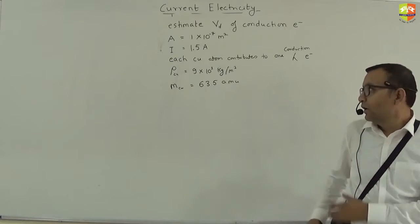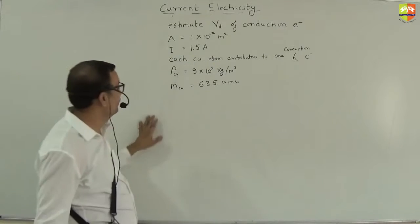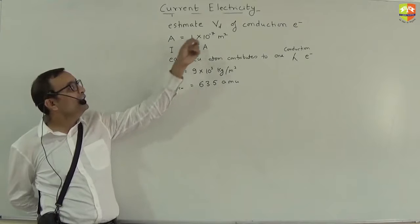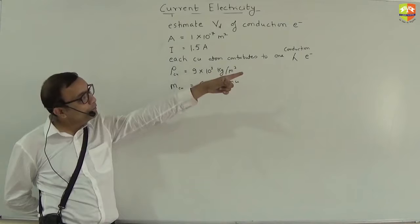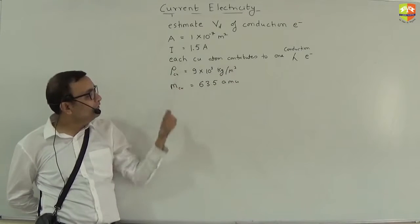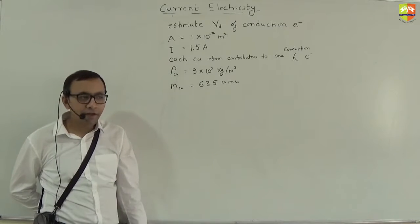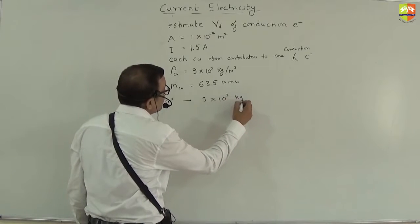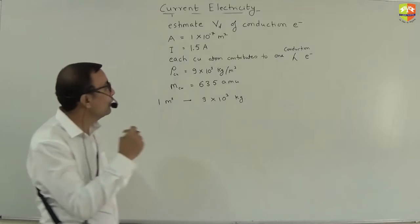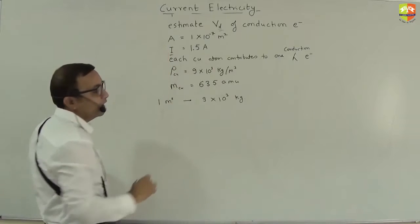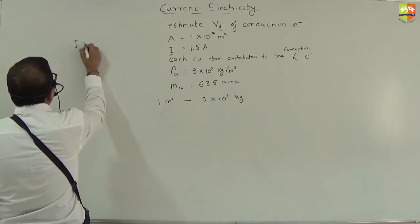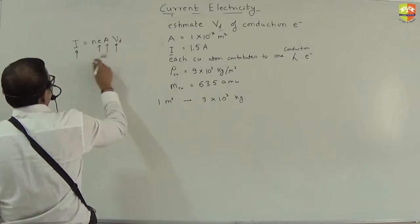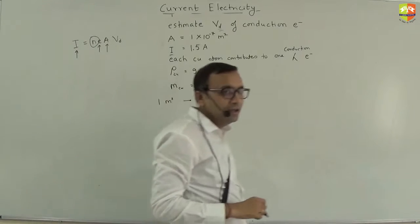Let's solve a problem: estimate the drift velocity for conduction electrons in copper. The cross-sectional area is given, current is given, each copper atom contributes one conduction electron, density of copper is given (9 × 10³ kg/m³), and atomic mass of copper is given. Using I = nеAv_d, we know e, A, and I, but we need to find n — the number of free electrons per unit volume.